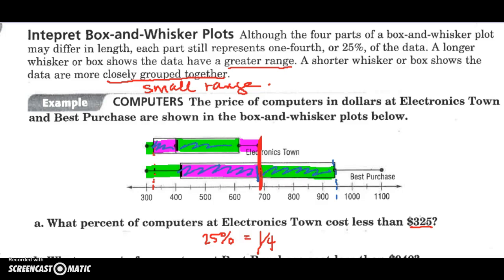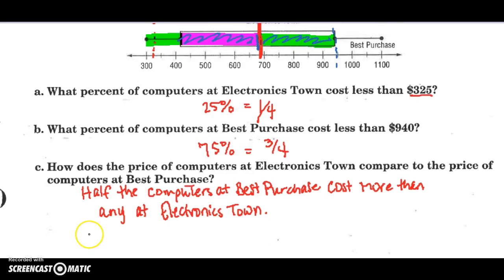So that tells us that the prices are varied. We've talked about that word before. But the pricing at Best Purchase varies more, or is varied more, than Electronics Town.